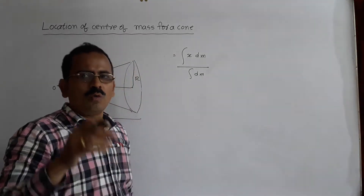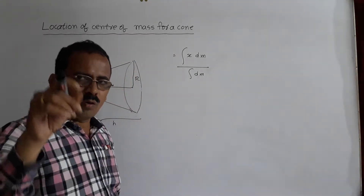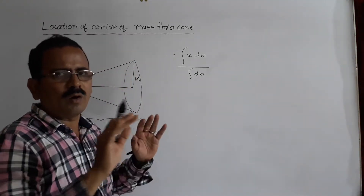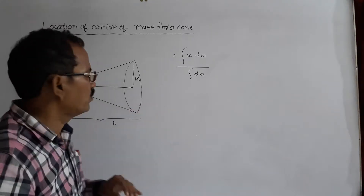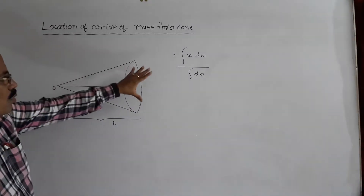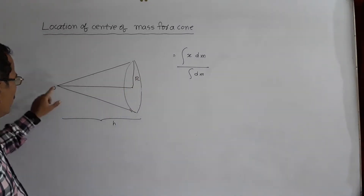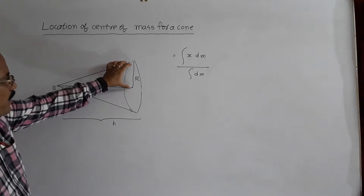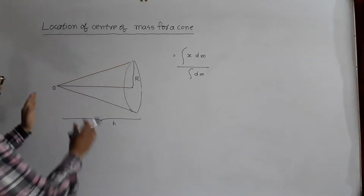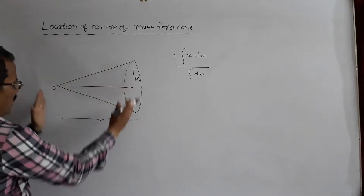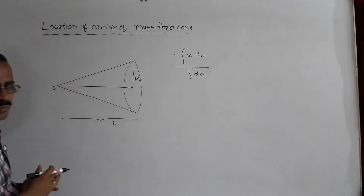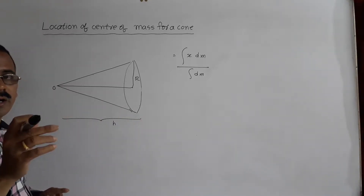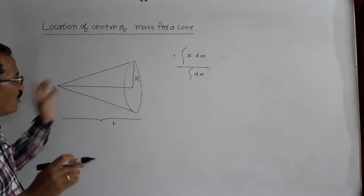We are going to locate the center of mass of a uniform cone. This is a cone — its vertex is O, R is the base radius of the cone, H is the height of the cone. Now we want to locate its center of mass.